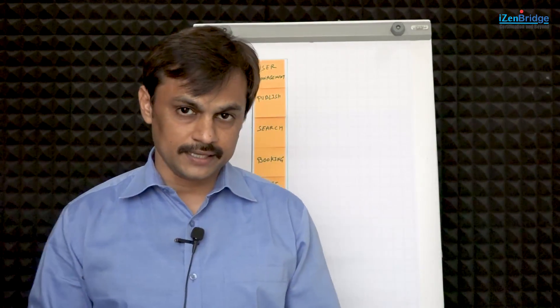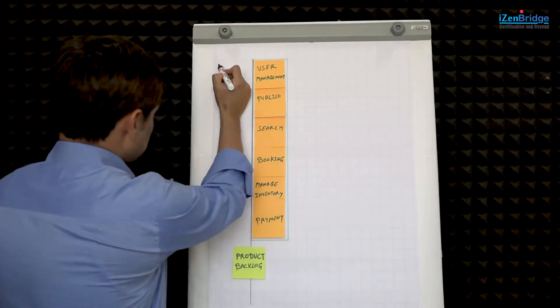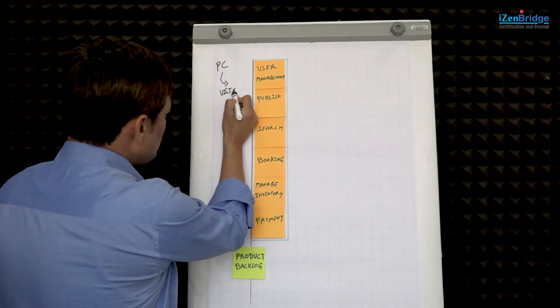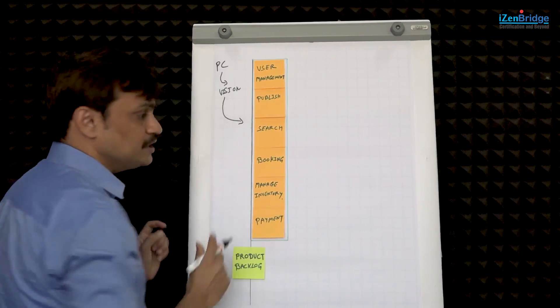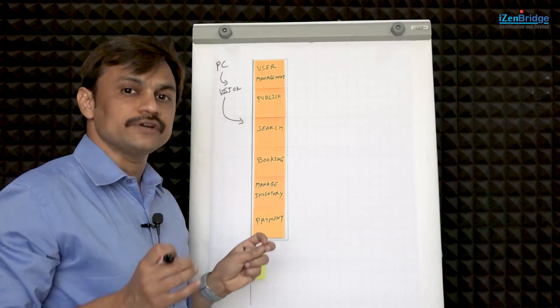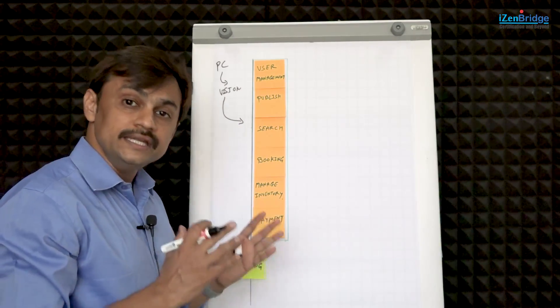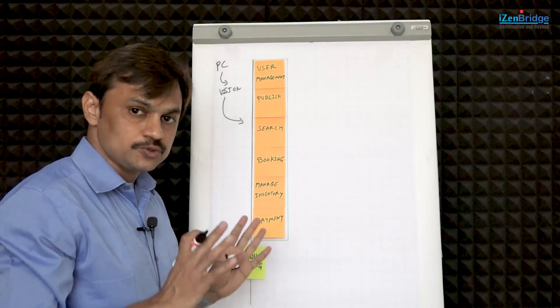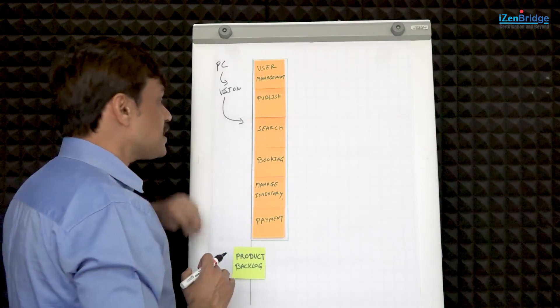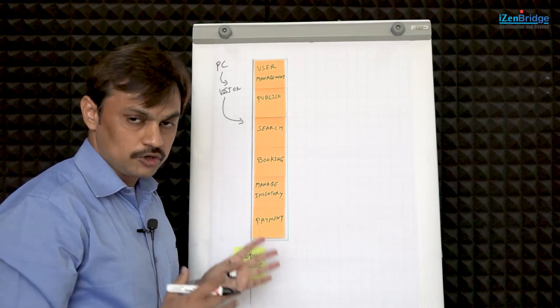Say you initiate a new project and you are working in the adaptive lifecycle — the requirements are going to be discovered as you go along. Initially, with the help of your project charter or a project-level vision, you get some idea of what we need to make. Your first product backlog will be a collection of high-level requirements discovered based on your initial understanding of the goal, and you may also interact with stakeholders to find those initial requirements.